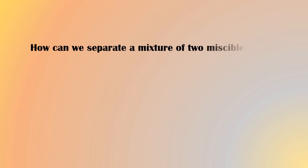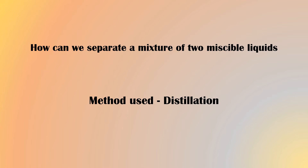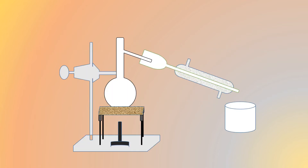Now we are going to learn how we can separate a mixture of two miscible liquids using distillation. Let's see the experimental procedure. Take a distillation flask containing acetone and water, which have different boiling points. Close it with a rubber stopper and insert a thermometer.